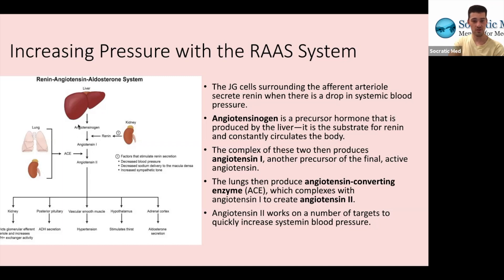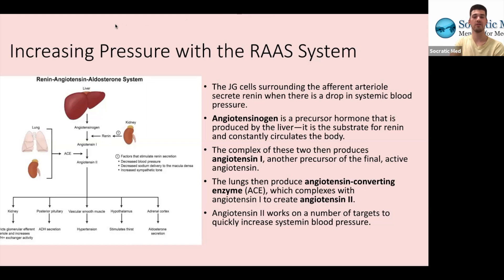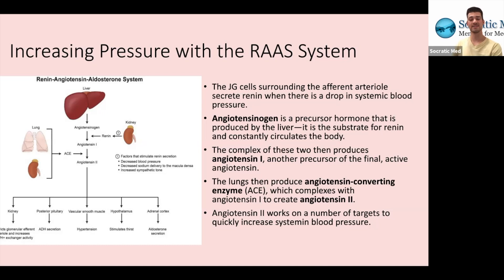As shown in the diagram, angiotensinogen is converted by renin into angiotensin-1, which is still a precursor hormone — not yet active. The lungs then produce angiotensin-converting enzyme, called ACE. If you're familiar with medicine, you've heard of ACE inhibitors, which control blood pressure — and this is exactly why. ACE complexes with angiotensin-1 to create angiotensin-2, which is the complete, final, active form, and it systemically raises blood pressure.